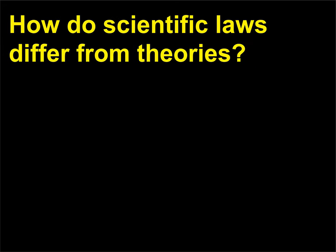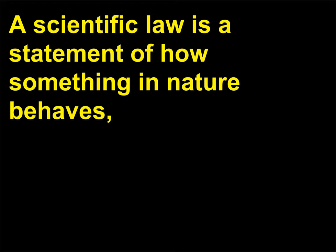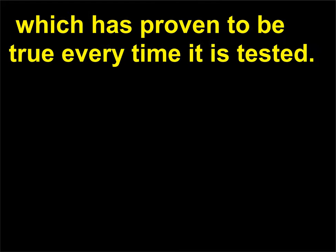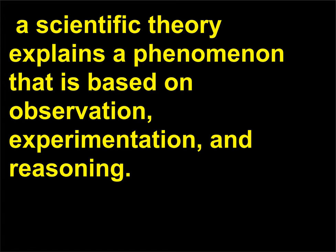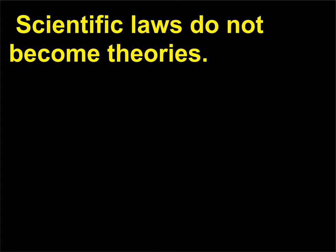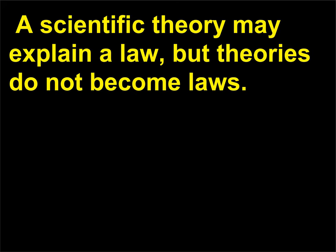How do scientific laws differ from theories? A scientific law is a statement of how something in nature behaves, which has proven to be true every time it is tested. Unlike the general usage of the term 'theory,' which often means an educated guess, a scientific theory explains a phenomenon that is based on observation, experimentation, and reasoning. Scientific laws do not become theories; a scientific theory may explain a law, but theories do not become laws.